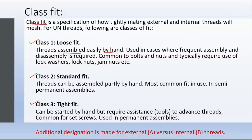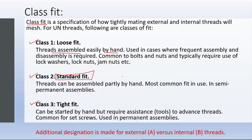In a loose fit, the hole size is much bigger than the fastener so the fastener can easily go in, and then lock washers or jam nuts are used to securely tighten the assembly. The most commonly used is the standard fit. In the standard fit, threads can be assembled partly by hand, but tools are needed for secure tightening. These are used in semi-permanent assemblies where disassembly is not frequent but may be required at some point.